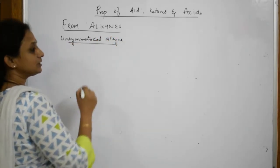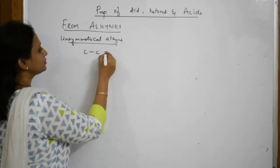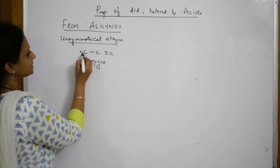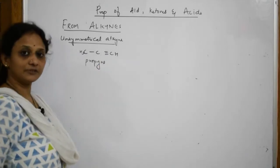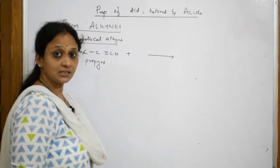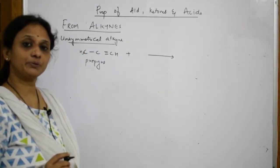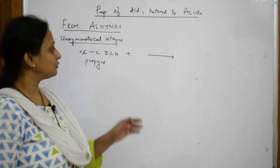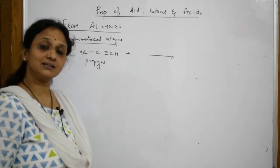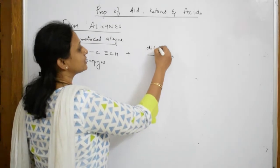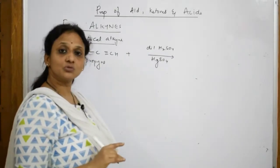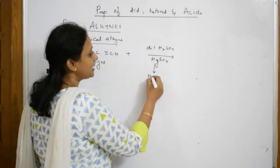Suppose I take propyne — carbon 1, 2, 3. Now this is propyne, correct? When I take this propyne and I have to prepare an aldehyde, remember: whenever you have to prepare an aldehyde or a ketone, you have to break the triple bond. To break that bond in an alkyne, you add a stronger acid like dilute sulfuric acid in the presence of mercury sulfate.